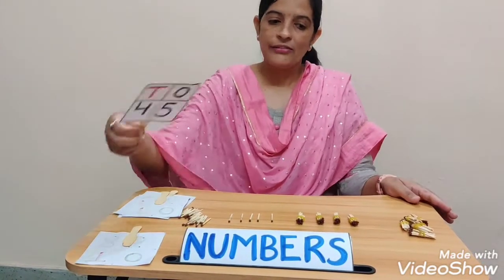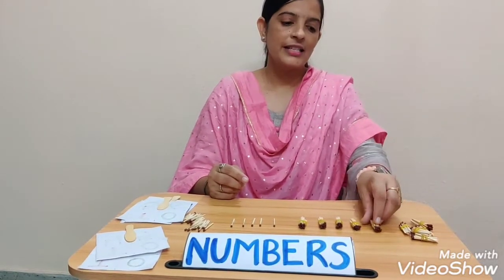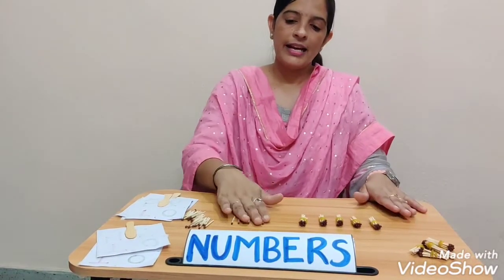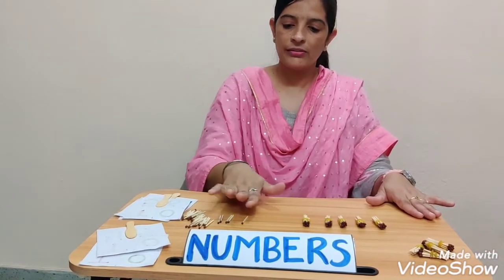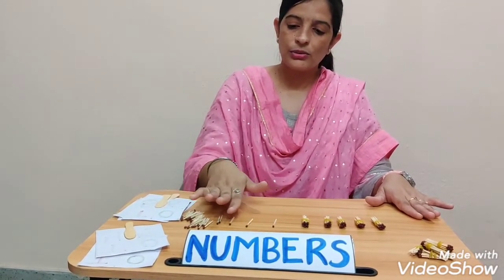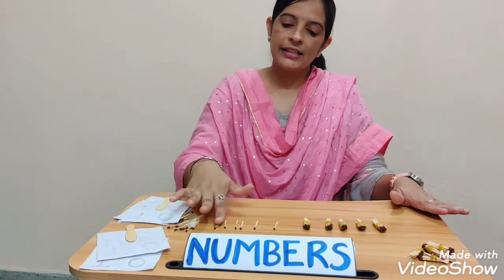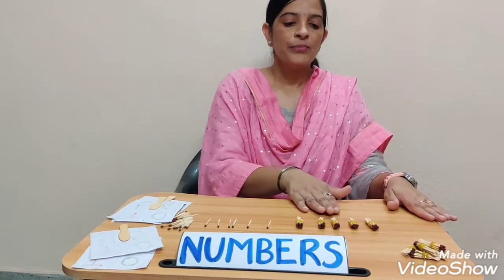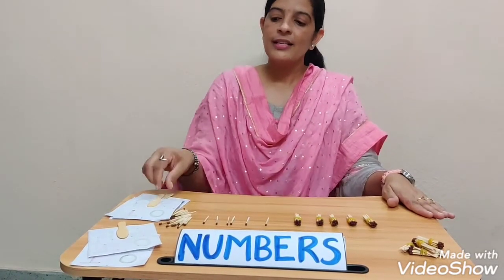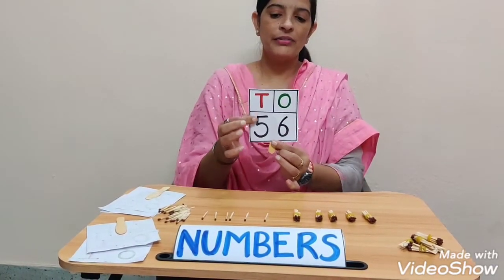Now we take some other bundles. I take one more bundle and some singles also. Here I have 5 bundles, then 1, 2, 3, 4, 5. And here I have 6 ones: 1, 2, 3, 4, 5, 6. So 6 ones and 5 tens — tell me the number. Yes, the number will be 56.